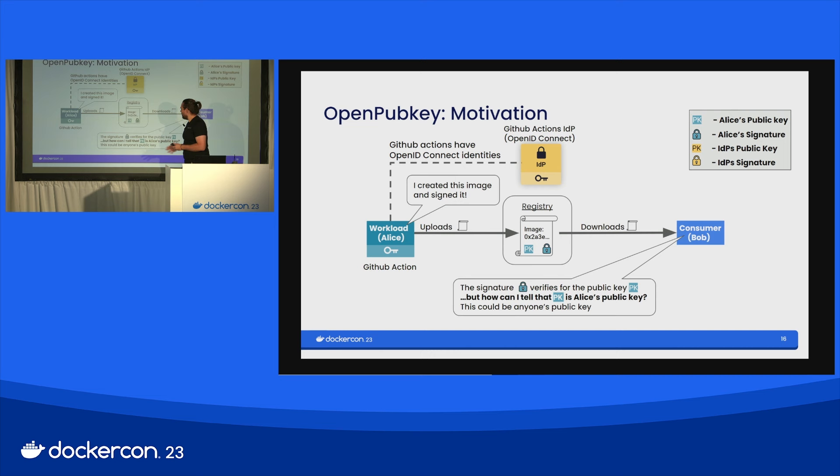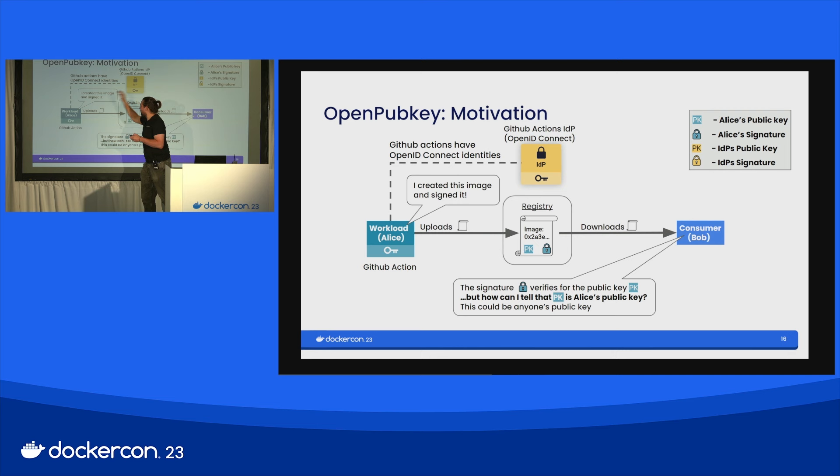When we talk about workload identity with GitHub Actions, we should think about OpenID Connect. GitHub Actions has an IDP — an identity provider built on OpenID Connect — that provides identities to workloads and allows workloads to prove their own identity. So we're going to build the solution to this problem of how do I know this is really Alice's public key using OpenID Connect.